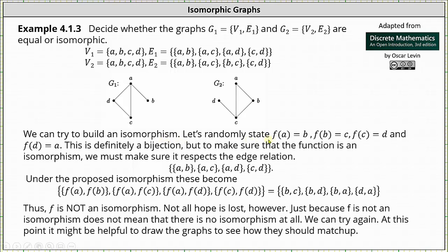To begin, let's just randomly state F of A equals B, F of B equals C, F of C equals D, and F of D equals A. Defining F in this manner indicates the function F maps the vertex of A in V1 to the vertex B in V2. It maps vertex B in V1 to vertex C in V2. It maps vertex C in V1 to vertex D in V2. And finally, the function maps vertex D in V1 to vertex A in V2.